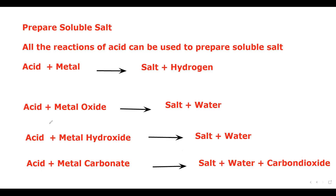When acid reacts with metal, it produces a salt in solution form — the salt is dissolved, not solid. From the solution, we can obtain the salt by crystallization or evaporation. There are four techniques to prepare a soluble salt: react acid with metal, acid with metal oxide, acid with metal hydroxide, or acid with metal carbonate.